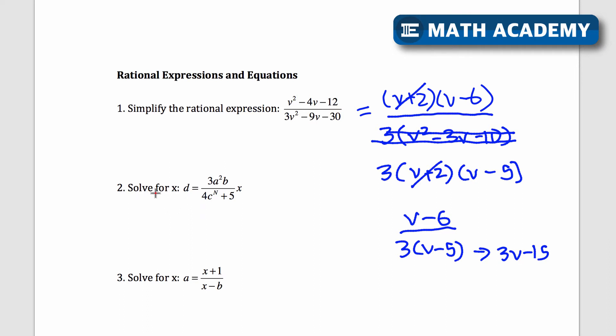Number two, solve for x where d equals 3a squared times b over 4c to the power of n plus 5 times x. Now this looks kind of tricky because there's a lot here. But the easy way to deal with this is just to notice I've got some fraction times x. So if I multiply by the reciprocal on both sides, this fraction will turn into 1.